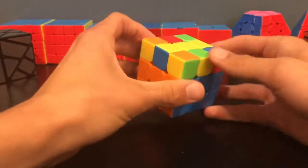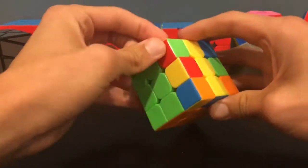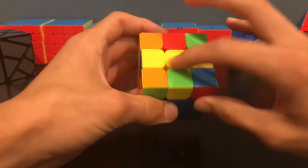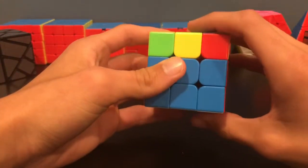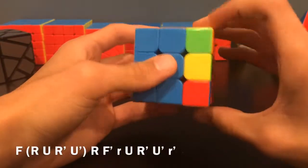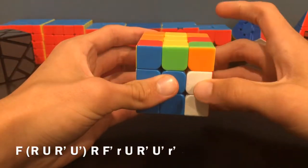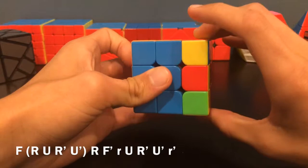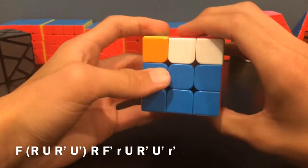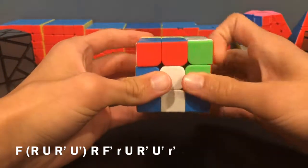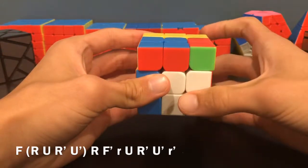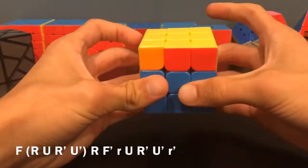This last case is when you have jumbled pieces here and jumbled pieces here. So hold this horizontally and then do this algorithm: F R U R' U' R U' F' R wide U R' U' R wide prime.